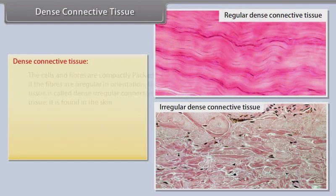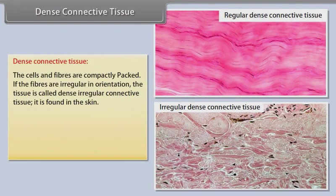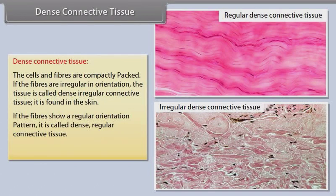Dense connective tissue. The cells and fibers are compactly packed. If the fibers are irregular in orientation, the tissue is called dense irregular connective tissue, and it is found in the skin. If the fibers show a regular orientation pattern, it is called dense regular connective tissue. Examples include tendon and ligament.